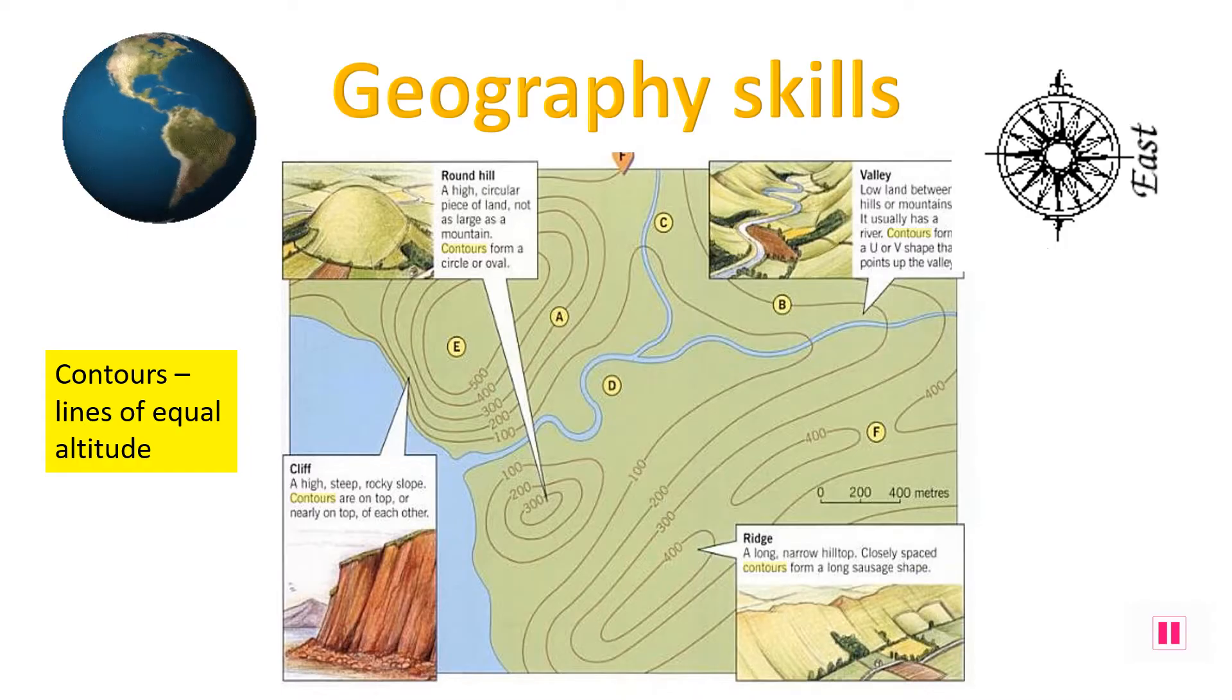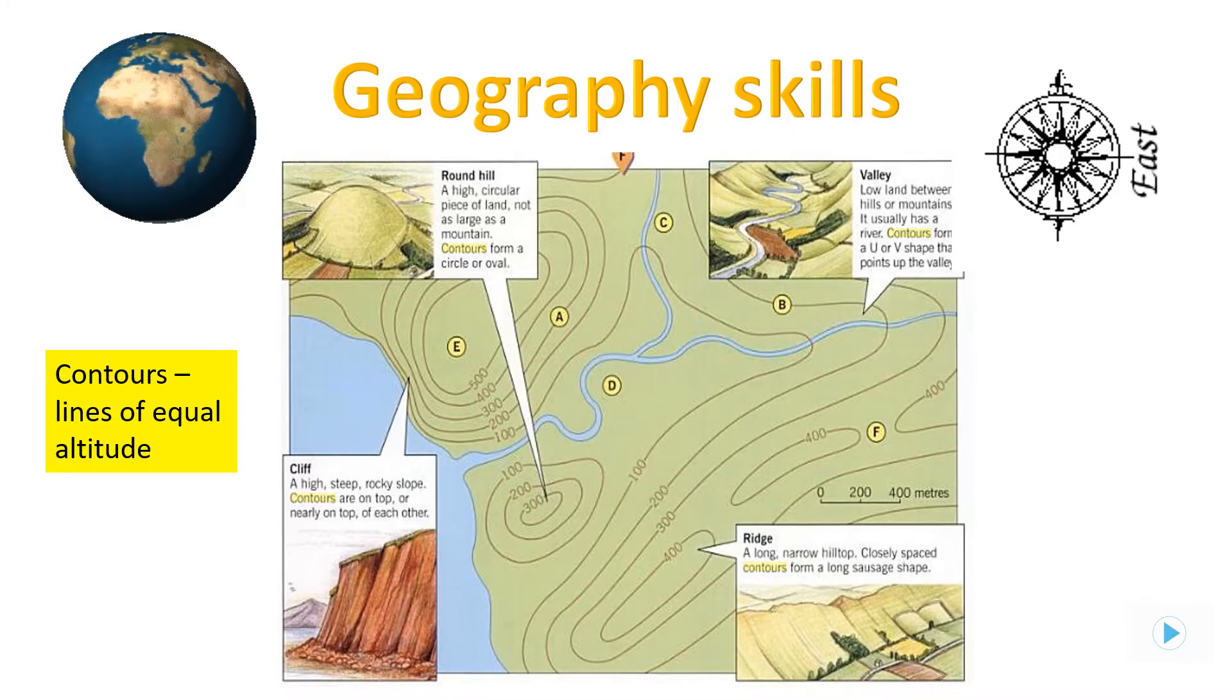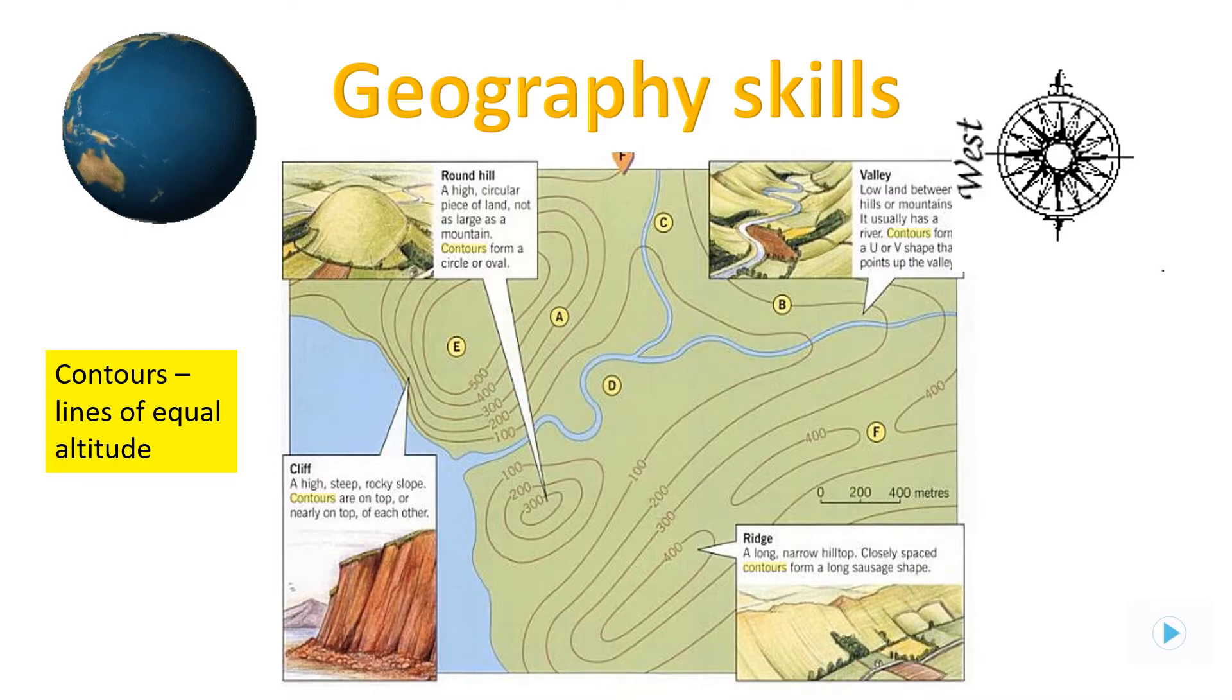Here we have a more complicated map with lots of contours. If you look closely you can see how high the land is, such as on the ridge in the bottom right being 400 meters above sea level. You can also notice that sometimes the contours are very close together, which indicates a very steep slope, such as the cliffs to the left of the map. Pause the screen and have a good look at the contours and the different landforms they show.